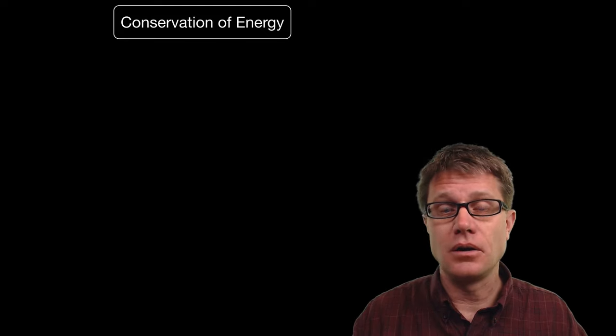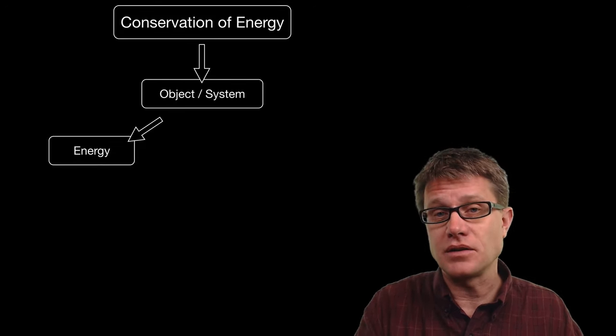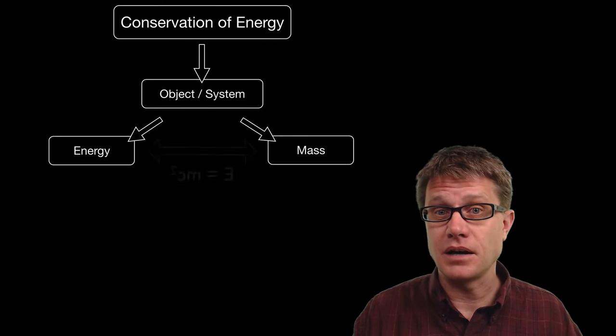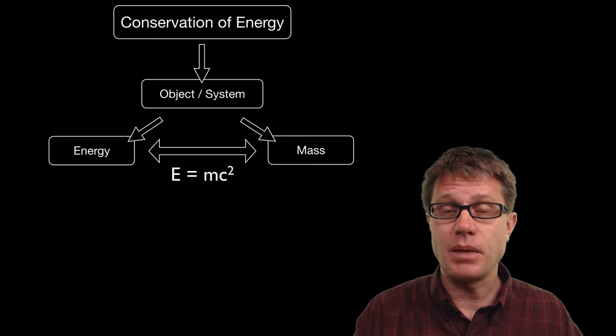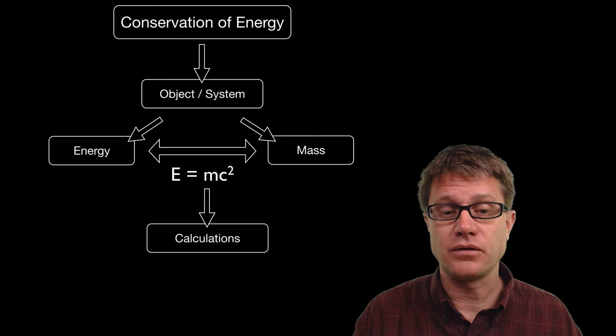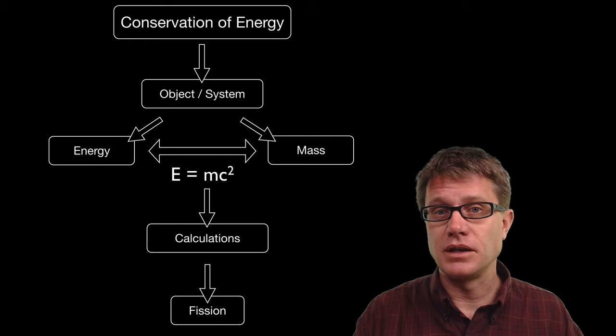And so the conservation of energy always occurs in an object or a system over time. The energy stays the same. But remember any object or system is going to have matter which has mass and that can be converted into energy and back again using E = mc². So in this video I am going to show you how to calculate the amount of energy that comes from mass in an interaction like that. And the example we will give is fission.